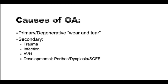Causes of OA are pretty straightforward — it's usually a wear-and-tear phenomenon. Wear and tear can be secondary to a lot of different things: trauma, infections, avascular necrosis, or developmental conditions like Perthes disease, hip dysplasia, or a slipped capital femoral epiphysis (SCFE) in a child. All those things affect joint development, leading to downstream wear. Our pediatric colleagues try to intervene early — thinking specifically about Blount's disease — to get those kids taken care of so they don't have an arthritic joint early in life. It's essentially just wearing out the tread on your tires.